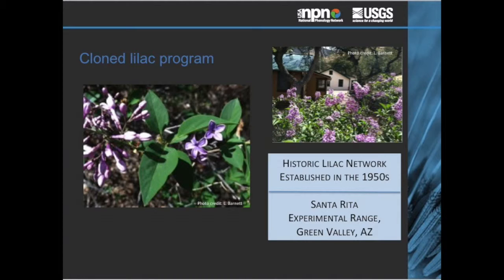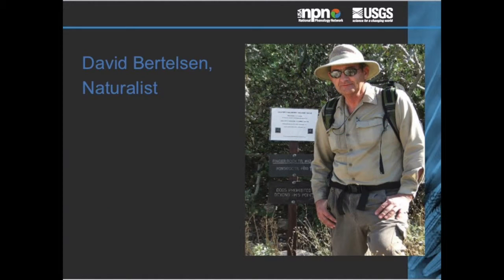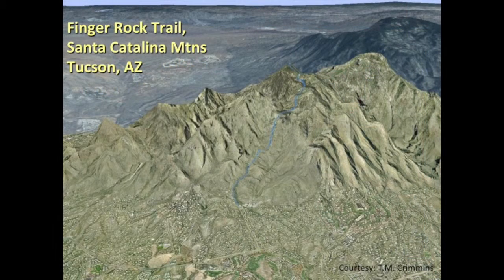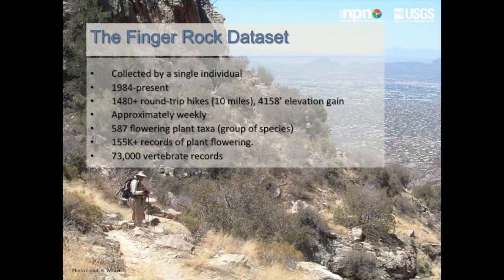Today, these data are used in spring casting and green wave projects to produce near real-time predictions of when spring may begin in the U.S. Another example of meticulous and valuable record-keeping is from a naturalist here in Tucson. David Berthelsen has been hiking the Finger Rock Trail in the Santa Catalina Mountains for over 30 years. On each weekly 10-mile round trip, he recorded phenology information for almost 600 flowering plant taxa and has amassed over 73,000 vertebrate records. These data were used with other local scientists to study rain shifts occurring in plants and animals on the mountain, related to factors such as the urban heat island effect from Tucson or climate change.